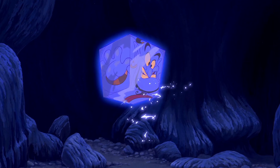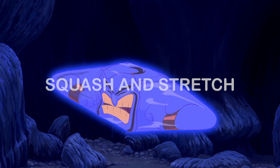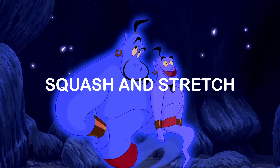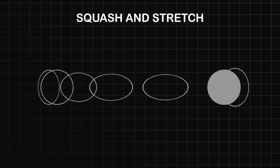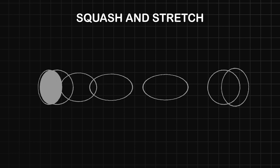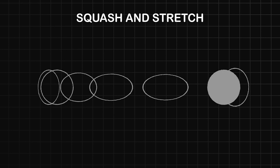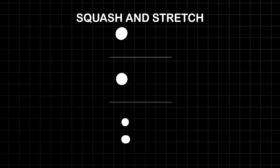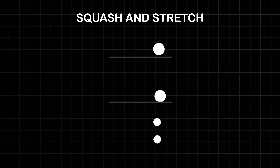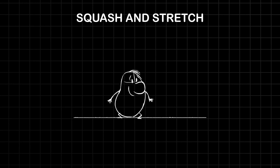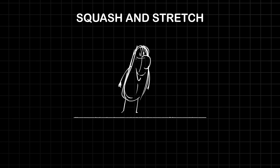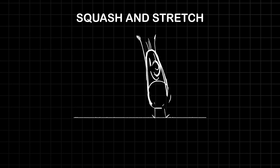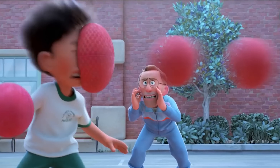The first and perhaps the most significant principle is the technique of squash and stretch. At the heart of animation lies the principle of squash and stretch, wherein objects deform to convey weight, elasticity and impact. From the playful bounce of a bouncing ball to the expressive contortions of cartoon characters, squash and stretch infuse animation with vitality and dynamism, creating a sense of realism and engagement.